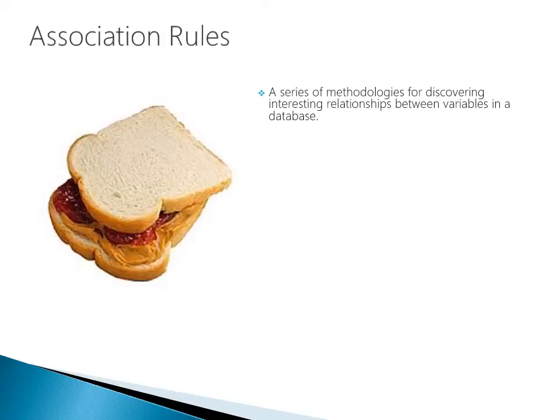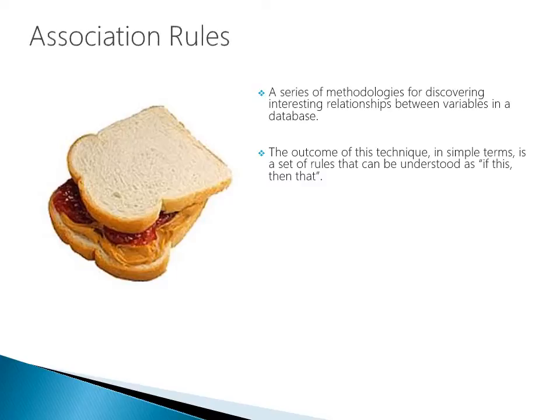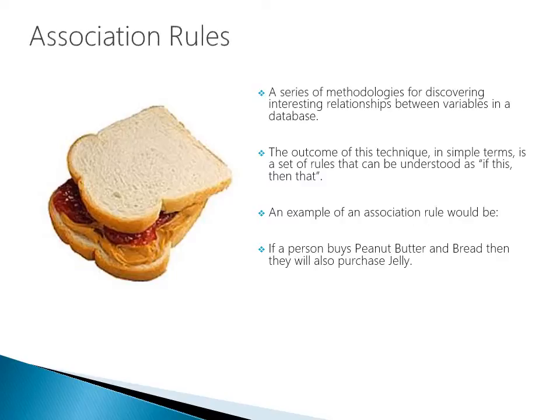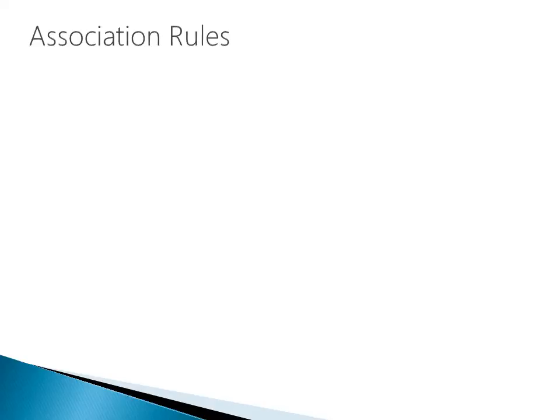What are association rules? Association rules are a series of methodologies for discovering interesting relationships between variables in a database. The outcome of this technique, in simple terms, is a set of rules that can be understood as "if this, then that." An example of an association rule would be: if a person buys peanut butter and bread, then they will also purchase jelly.